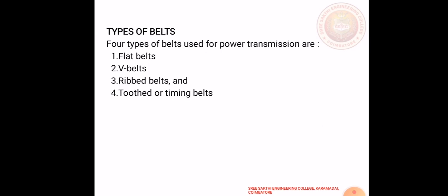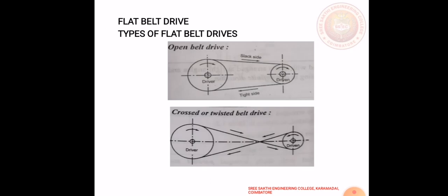Belts are built in different types: flat belts, V-belt, ribbed belts, and toothed or timing belts.